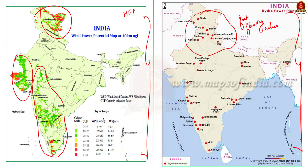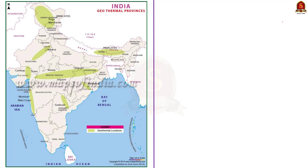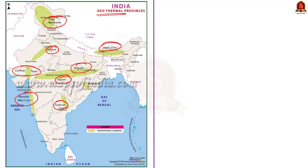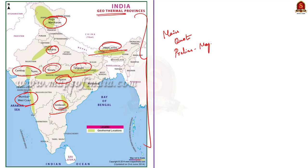Moving on to the next type of renewable energy: geothermal power also comes under the nomenclature of renewable energy. A map of some of the important potential geothermal sites present in India has been provided. These kinds of information are very crucial for both prelims and mains. In prelims, they can ask about the sites of potential renewable energy sources in India, so you should be aware of all these facts and observe all the maps provided.